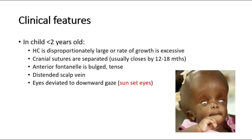In children less than two years old, the clinical features include a head circumference that is larger compared to the other parts of the body. The cranial sutures are separated, and we will see a bulging and tense anterior fontanel, distended scalp veins. If hydrocephalus is left untreated, the eyes will deviate to a downward gaze, which we call the sunset sign, shown in this picture — the eyes are looking downwards.